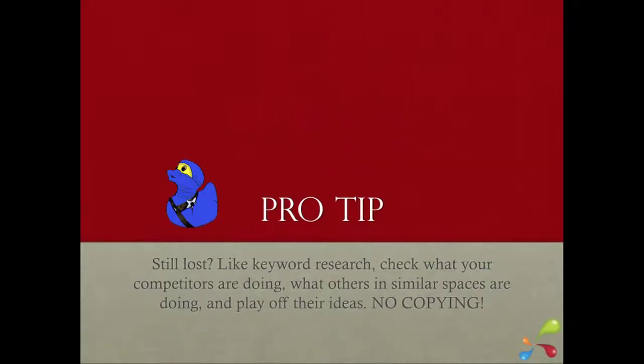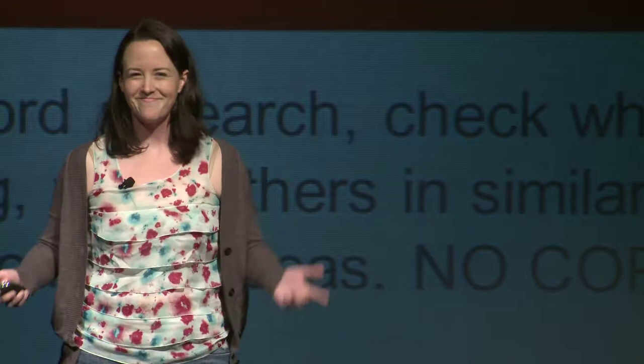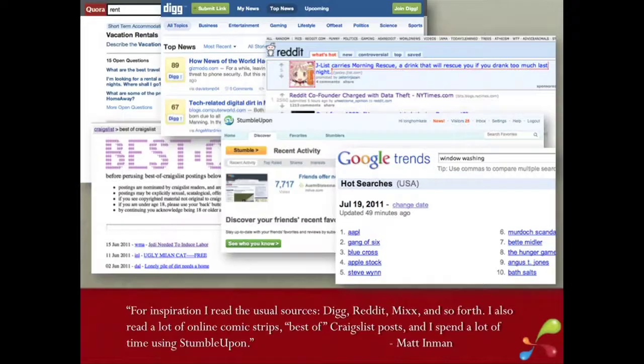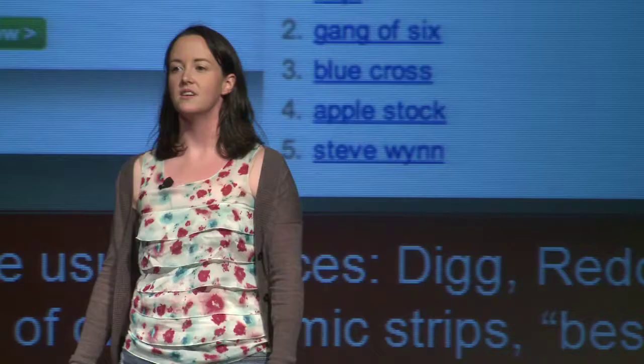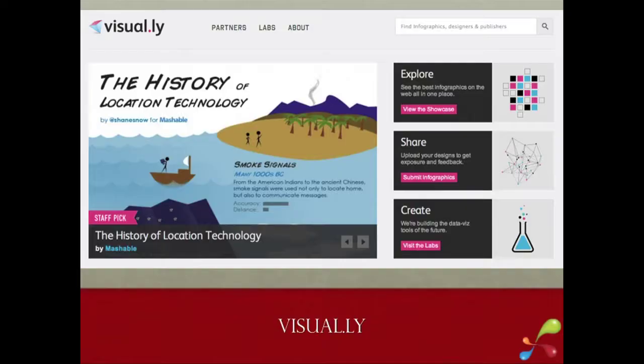If you're still lost and can't come up with inspiration, think about keyword research. Go look at what your competitors are doing and take it a step further — or apply it to what you're doing, but don't copy it. Don't sit there and go, 'My competitor did this, I'm going to do this exact same thing.' That doesn't work — it's like somebody trying to do Old Spice again. Matt says: go check out Digg, Reddit, Mix, Google Trends. I get a lot of great ideas for articles from Google Trends — take any of those ideas and apply it to your topic.